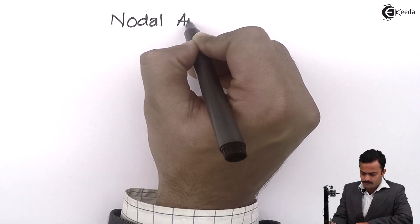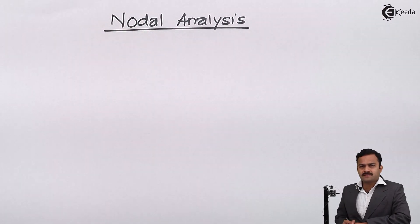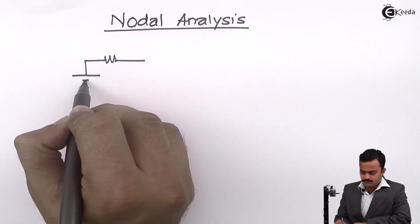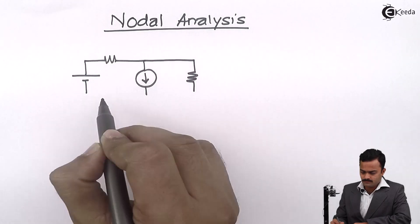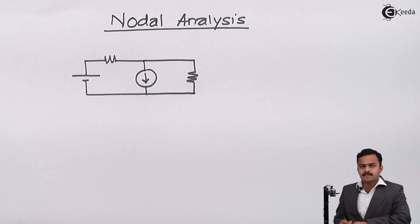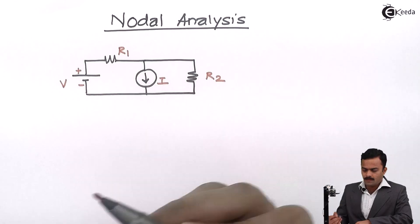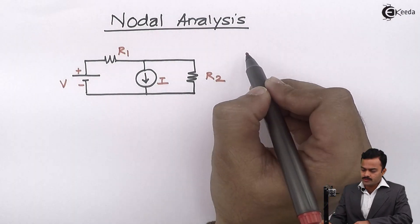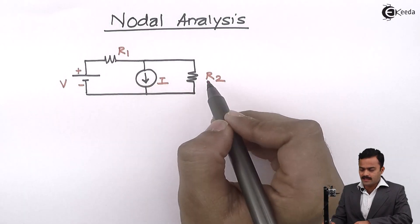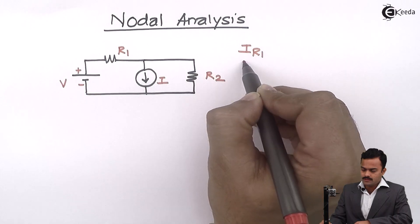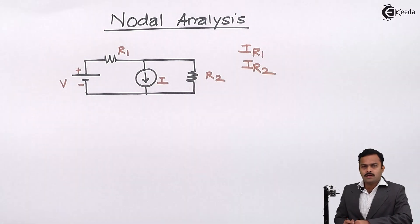Hello friends. In this video, we are going to see the application of Kirchhoff's current law to a circuit and develop a technique called nodal analysis. Let's take a simple circuit with generalized values. We need to find the current flowing through the branches where resistances are connected — meaning current flowing through R1 and R2 — using nodal analysis.